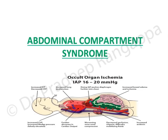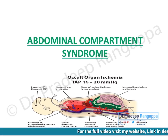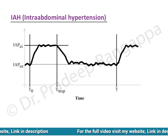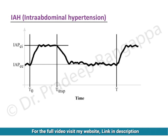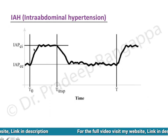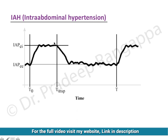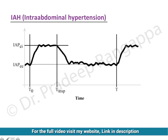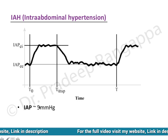I'll be talking about abdominal compartment syndrome, which can definitely be asked in an exam, so it's good to know the salient points. Looking at the waveform of intra-abdominal pressure, during end inspiration the intra-abdominal pressure goes up, and during expiration it comes down. That is the basic waveform of how intra-abdominal pressure looks. Normally, the intra-abdominal pressure is around 5 millimeters of mercury.